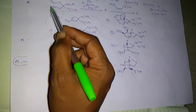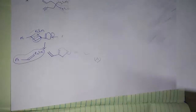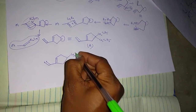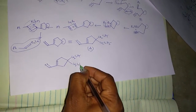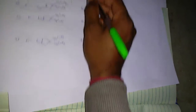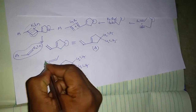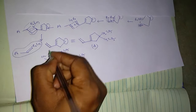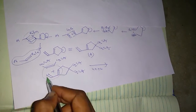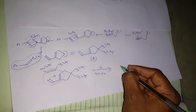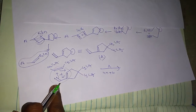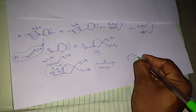When ruthenium or Grubbs' catalyst reacts with the reactant here, we get an unsaturated compound. This is a 4+2 addition reaction — a Diels-Alder reaction — with six pi electrons. When heated, we can get the compound via a concerted mechanism through a six-electron transition state. We can get the product like this — this is compound B formed in the given reaction.